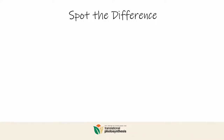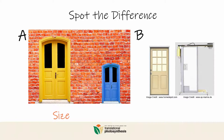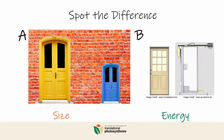Before we go further, can you spot the main difference between these two doors? Size — yes! And what about these two doors? Energy. Well, size and energy are two important factors in cell transport, and that's why we use them to classify the different types of transport.